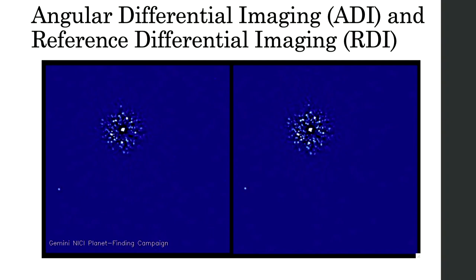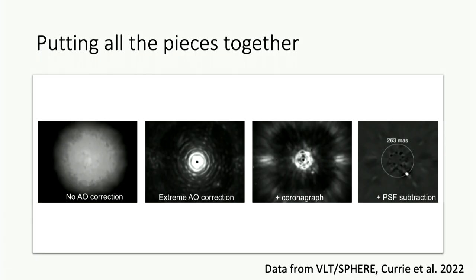So those are the three main techniques we need to put together. You start with your non-AO-corrected image. Extreme AO gets you the resolution you need. You get partly there for contrast with the coronagraph. And finally, using post-processing techniques to remove your PSF, you pull out your planet.